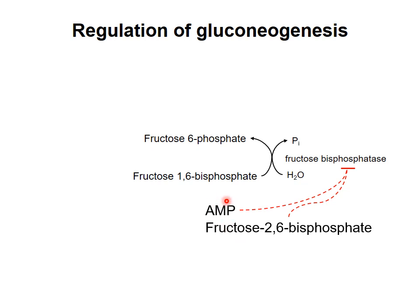AMP is an indicator of the energy status of the liver cell. Remember that gluconeogenesis is energetically costly, consuming six ATP equivalents per glucose made. A high concentration of AMP indicates that the liver cell is running out of ATP and is in danger of exhausting itself trying to provide glucose for the bloodstream. So when AMP is high, gluconeogenesis is inhibited to give the liver cell a chance to build up its own ATP supply.